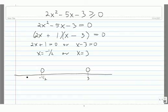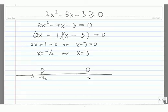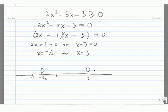So we choose a test value in each one of these three segments. For the first one, we choose a test value smaller than negative 1 half — I'll choose negative 1. In the middle piece, we choose a number between negative 1 half and positive 3, so I'll choose 0. In our final piece, we choose a number larger than 3 — I'll choose 4.